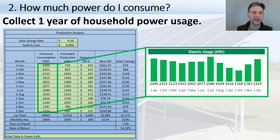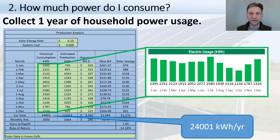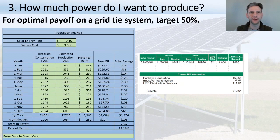Take your utility bill and plug in January through December into the historical consumption column. At the bottom it will tally up how much you use in a year — in my case 24,000 kilowatt-hours. That 24,000 kWh number is what you'd need to cover if you were going off-grid, but we'll use it as a calculation point for sizing our grid-tie system.